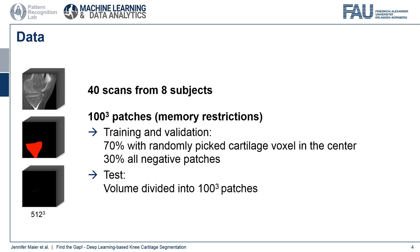The dataset consists of 40 scans from 8 subjects with manual segmentations of bone and cartilage surface. Due to memory restrictions, the volumes were divided into patches of 100 by 100 by 100 voxels. For training and validation, 70% of the patches were chosen to have a randomly picked cartilage voxel in the center. The remaining 30% did not include cartilage. The test volumes were simply subdivided into patches.